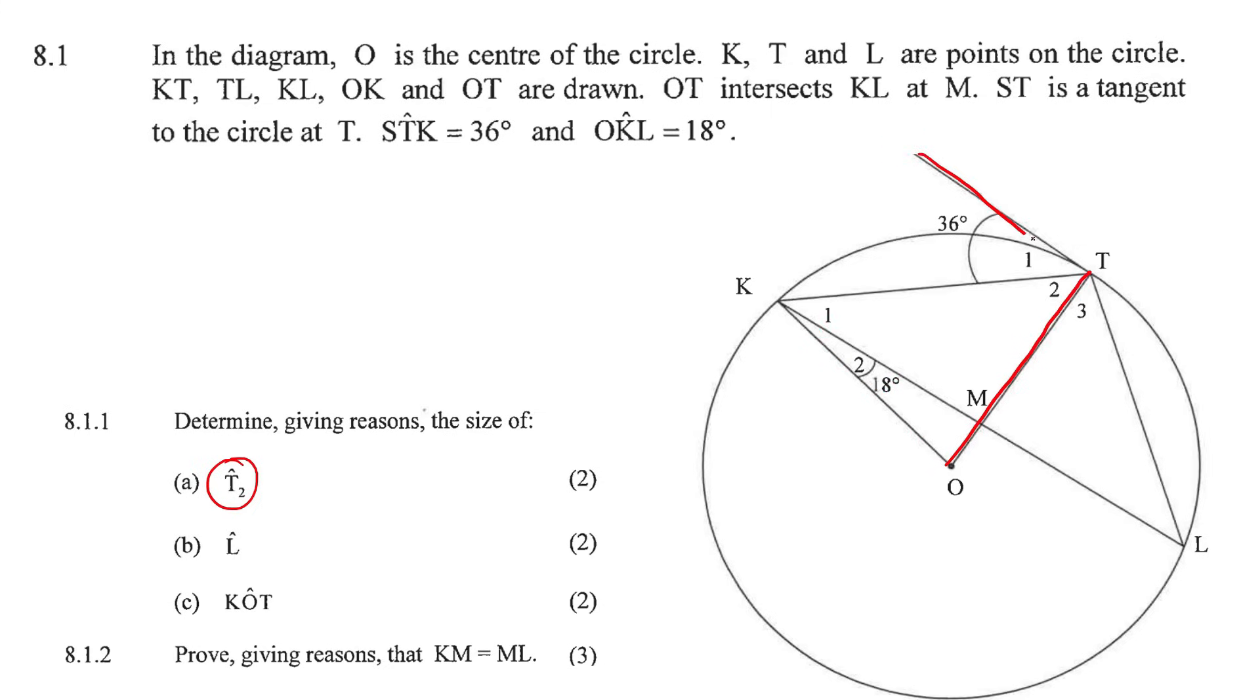This is a tangent, and we've learned that a tangent and a radius makes 90 degrees. We already know that this is 36, so we could say that T2 is going to be equal to 90 take away 36. The reason is tangent perpendicular to radius, and 90 minus 36 is 54 degrees. So that means T2 is 54.